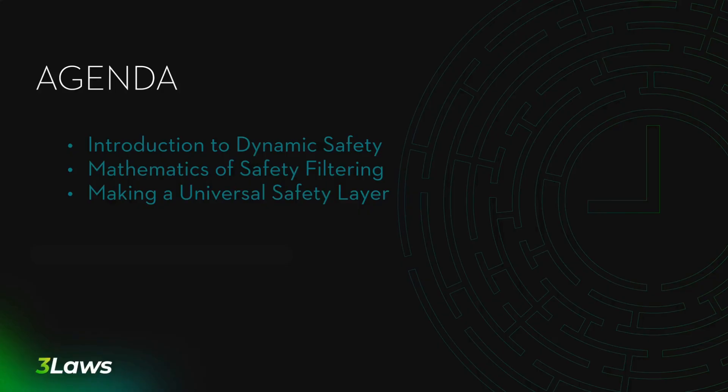We'll start with an introduction to dynamic safety and the background of Three Laws. Then we'll jump into the mathematics of safety filtering, and talk about the necessary conditions and constructions required to make an assurance of safety for a robotic system. We'll use this math as the backbone for how to construct a universal safety layer, which will be the final major topic of today's session. Applications and use cases will be sprinkled throughout, and you can expect around 20 minutes of content.